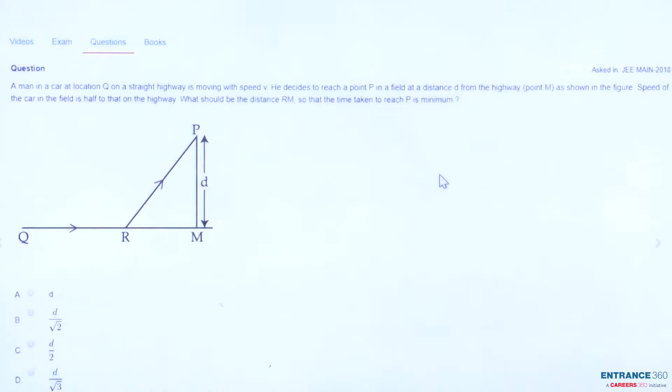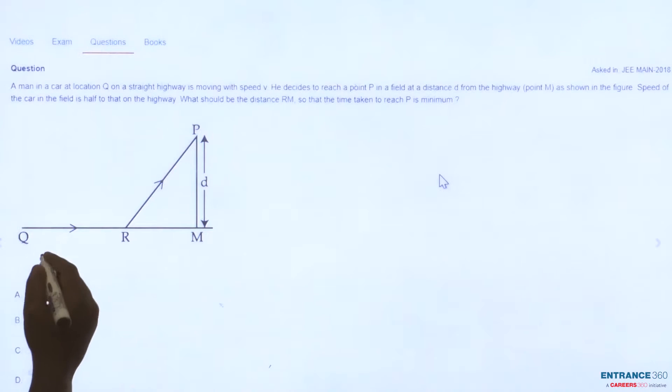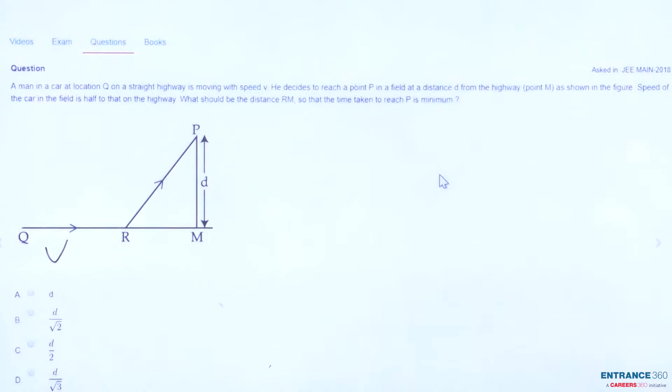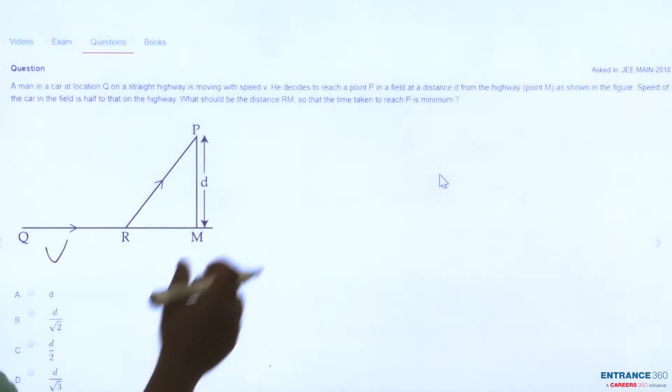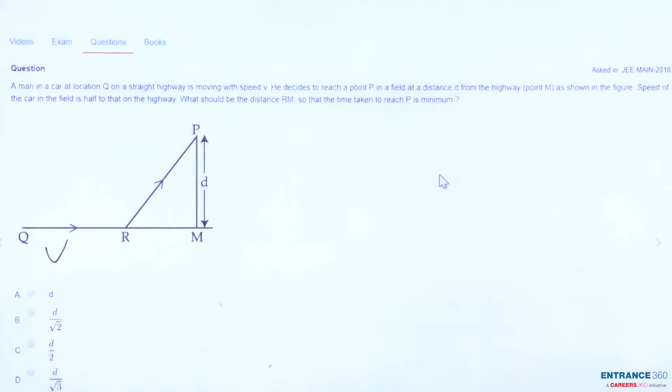Let's try to understand the question with the help of this figure. The question says a man in a car located at point Q started to move towards point R at speed V during this QR path. Then he decided to move to point P which is at distance D from the road.